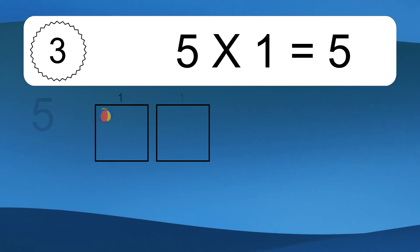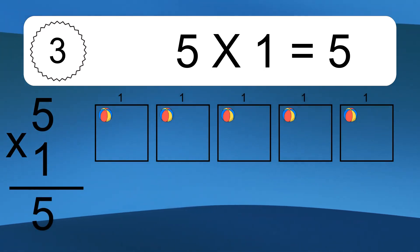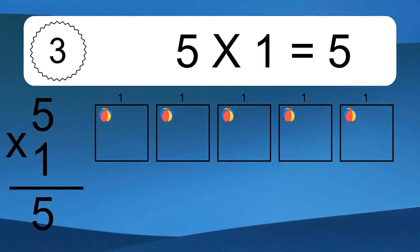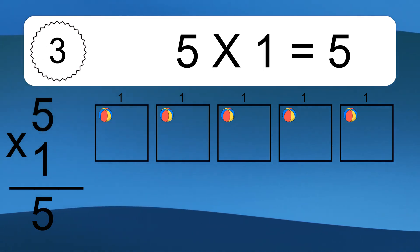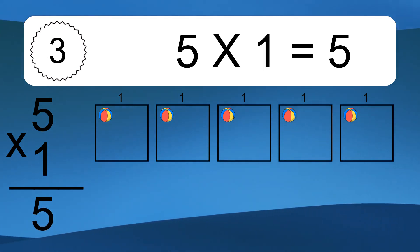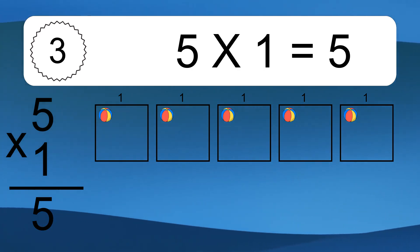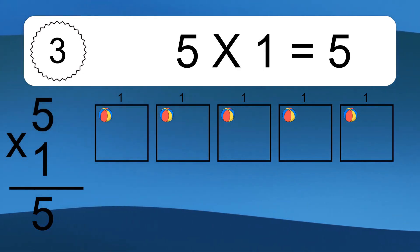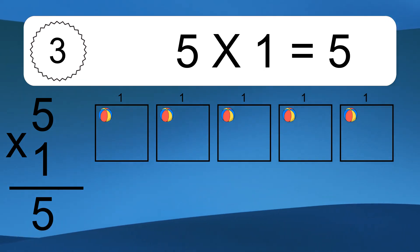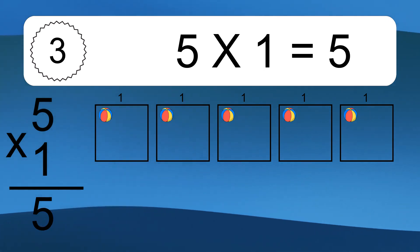Five times one equals what? Five times one equals five. We have five boxes, and each box has one colorful ball inside. If you count all the balls in all the boxes together, you will have five times one balls. This equals five balls.